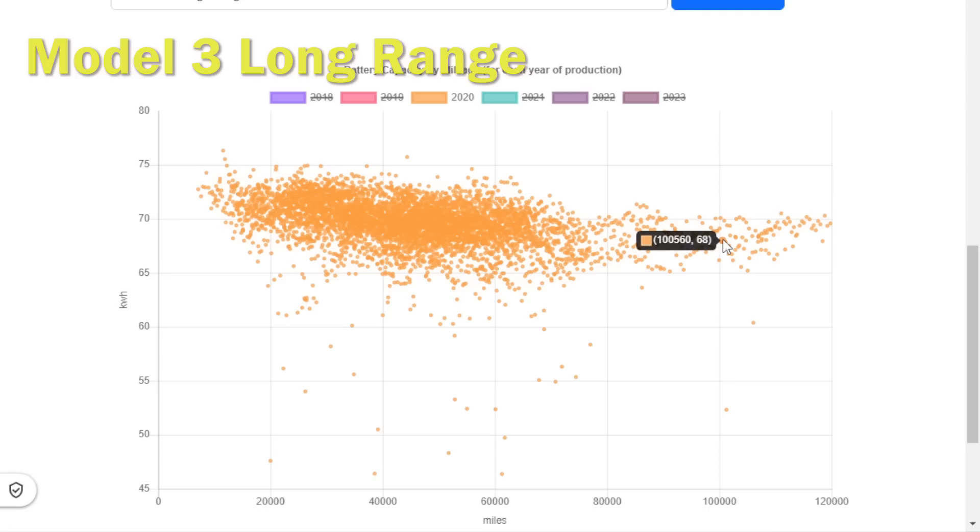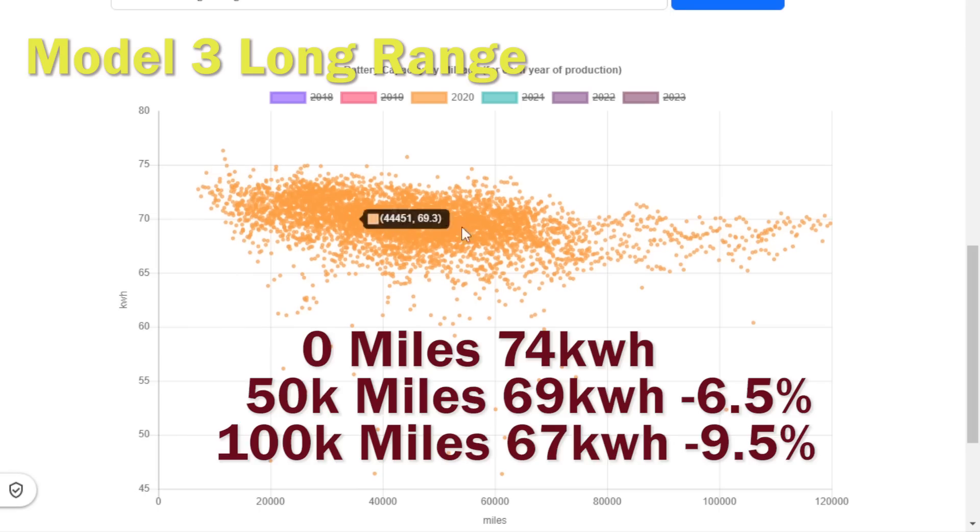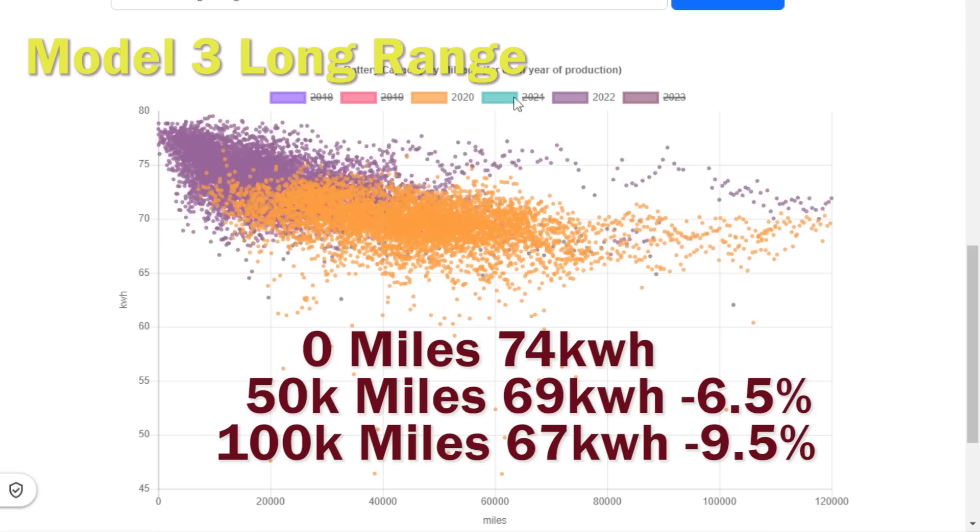If we now take a look at cars built in 2020, we get pretty much exactly the same results. The battery starts around 74 kilowatt hours, by the time they've hit around 50,000 miles it's dropped to 69 kilowatt hours, so the first chunk of the depreciation has occurred, and by the time it's hit 100,000 miles it's lost a couple more kilowatt hours but it's really started to level off.